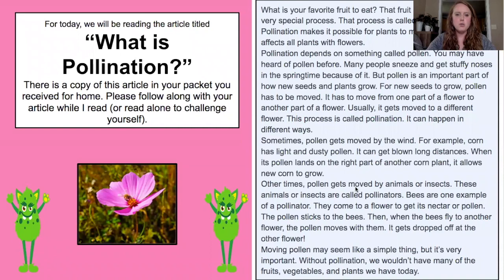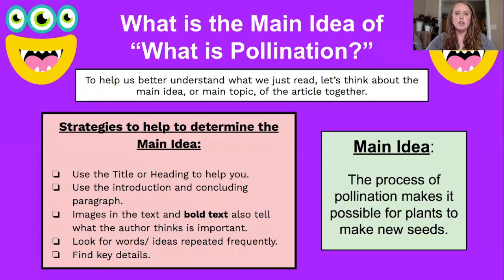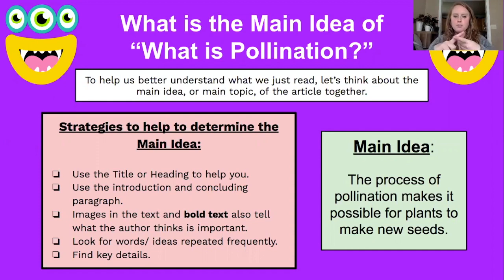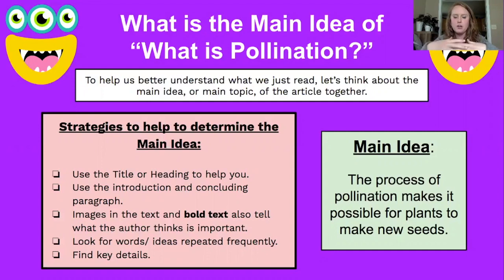We would always start with articles provided from the county. Today's article was 'What is Pollination?' I would expect the students to read with me, then have a short discussion about what the article was about and pull out things they learned before talking about the main idea. We would stop and think: what strategies can we use to determine the main idea? Things like the title and heading, the introduction and conclusion, images, bold print, thinking about what the author repeated, what the author was trying to get across, and finding those key details.